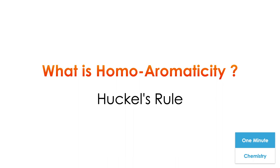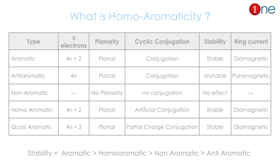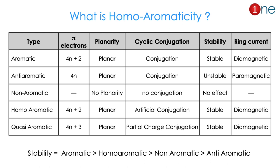Welcome to One Chemistry, this is the One Minute Chemistry series. We are going to quickly see what is homo aromaticity, using the Hückel rule. Homo aromaticity is one type among the five aromatic types.